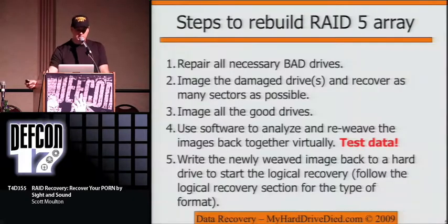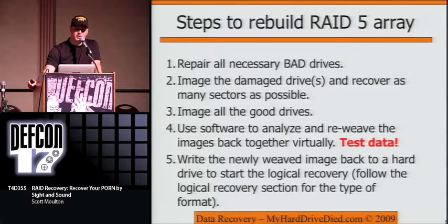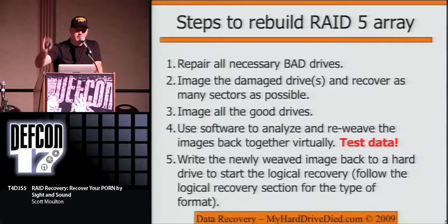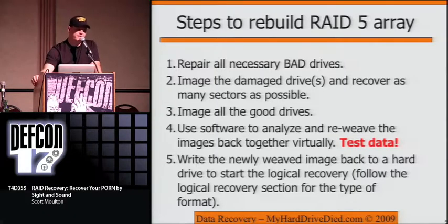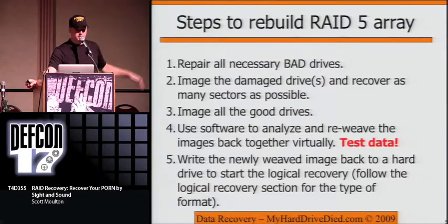So here are the steps I would normally do. First: repair the bad drives. Don't waste time imaging the good ones first — I've seen people image the first six drives out of seven and then ask about the bad one. If you don't get the bad drive back, it won't matter how much work you do on the others — it'll all be wasted time. I work on the bad drive first. Sometimes you have to start doing an image to figure out which one is bad, but most of the time you know pretty quickly. Then image the good ones, step through the process, and test the data.